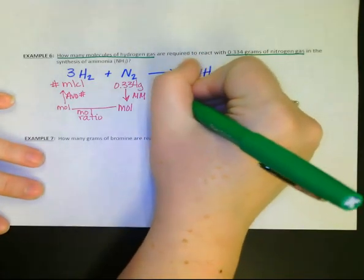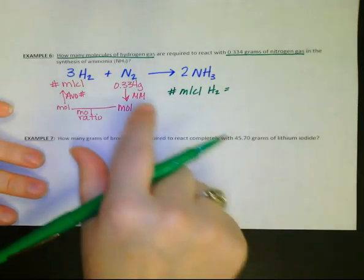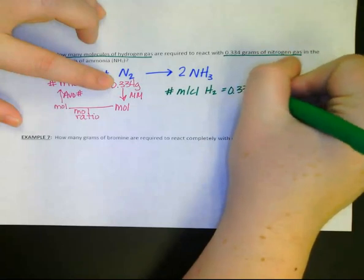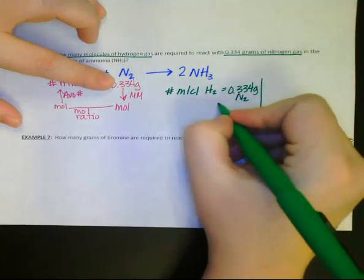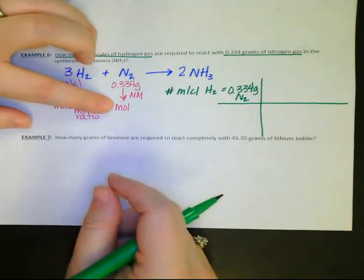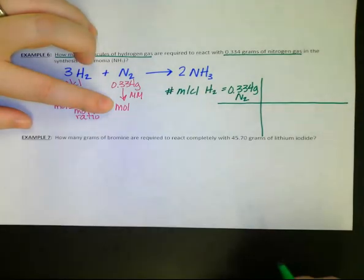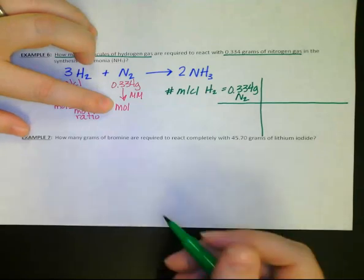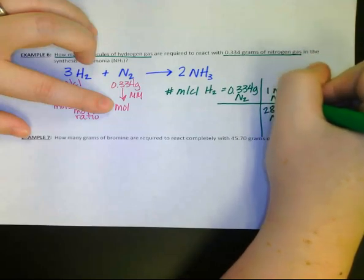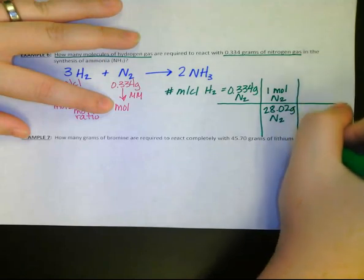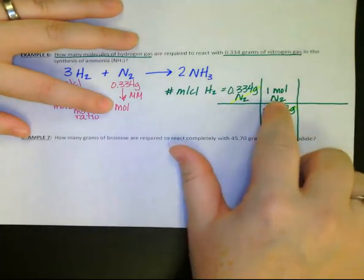So let's do some math. I want to know the number of molecules of hydrogen gas. I start by writing down what I know, follow my map. So I have 0.334 grams of nitrogen gas. I need to find the number of moles by using the molar mass. One nitrogen is 14.01, so 28.02 grams of nitrogen is one mole of nitrogen. That gets me the number of moles.